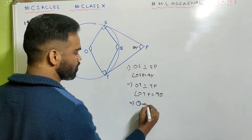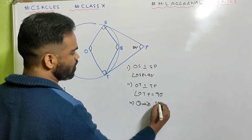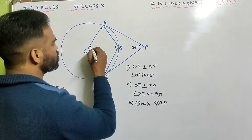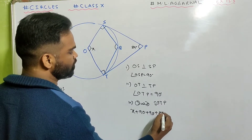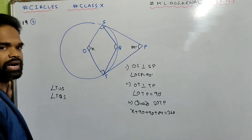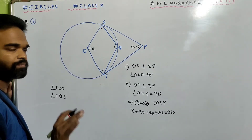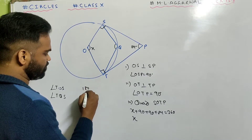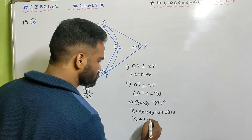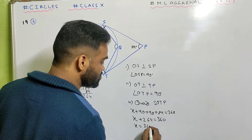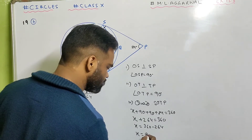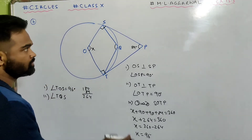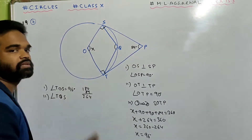Looking at quadrilateral SOTP, all angles add to give 360. So X plus 90 plus 90 plus 84 equals 360. The sum of interior angles of a quadrilateral is 360. That gives X plus 264 equals 360, so X equals 360 minus 264, which is 96 degrees. Angle TOS is 96 degrees.